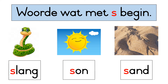Now we look at words that start with the S sound. Nou kyk ons na woorde wat met die S klankie begin. Our first word is slang. Slang. Our second word is son — the sun. Son. And then our other word is sand. Sand.